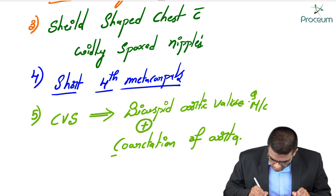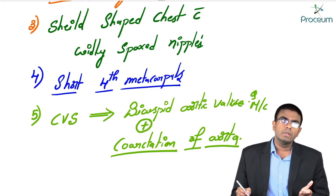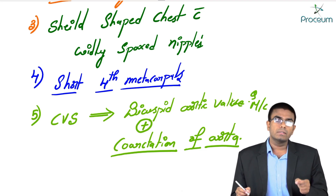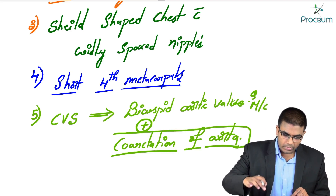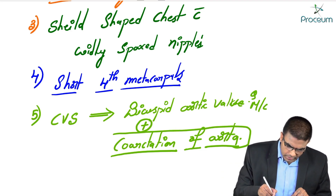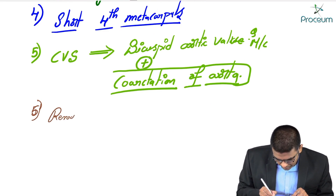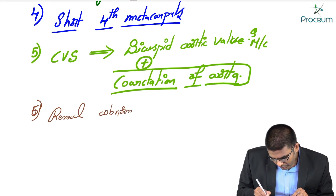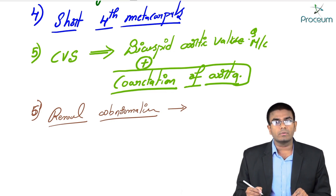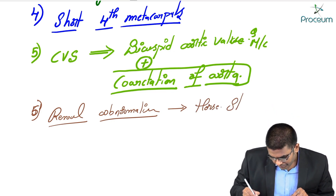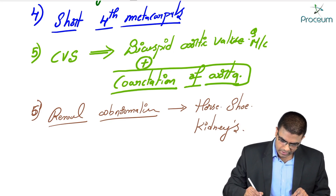The examiner's favorite MCQ regarding cardiac abnormalities in Turner syndrome is coarctation of the aorta. The question may ask: coarctation of the aorta is associated with Turner syndrome, Edward syndrome, Patau syndrome, or Down syndrome — and the answer is Turner syndrome. Turner females can have coarctation of the aorta. Renal abnormalities also occur; horseshoe kidneys can be seen in this female.